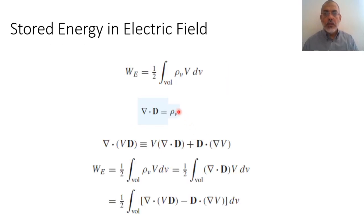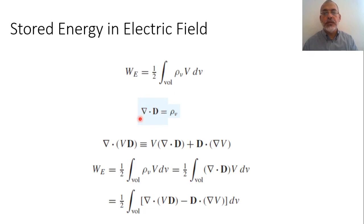From Gauss's law, we know that the volume charge density ρV equals the divergence of the electric flux density D. So we can replace ρV by the divergence of D. But before doing this step, let us first perform a vector differentiation operation.